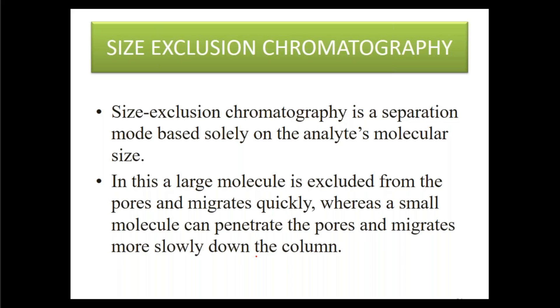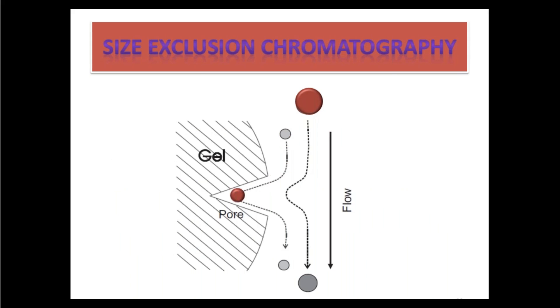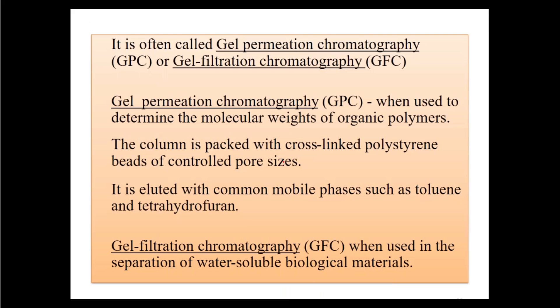Gel permeation chromatography is the term used when size exclusion is applied to determine molecular weights of organic polymers; the column is packed with cross-linked polystyrene beads of controlled pore sizes, eluted with common mobile phases such as toluene and tetrahydrofuran. Gel filtration chromatography is the term used when separating water-soluble biological materials. Both will be studied in detail in the respective chapter.